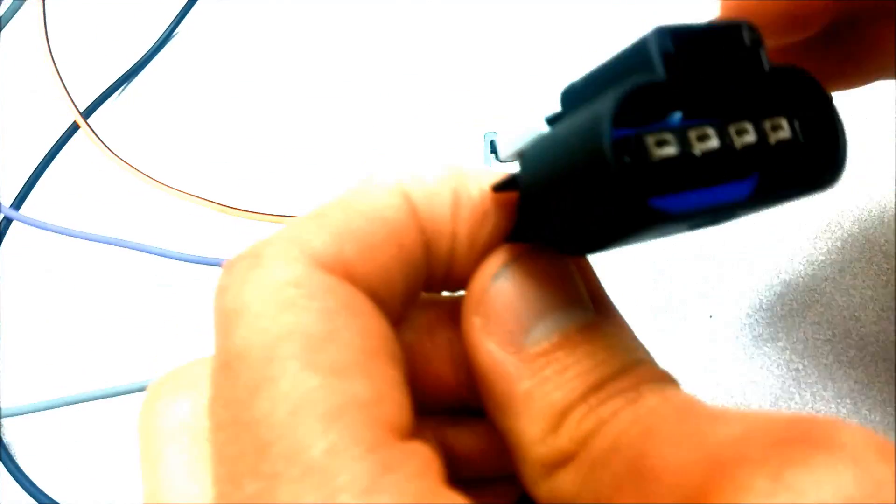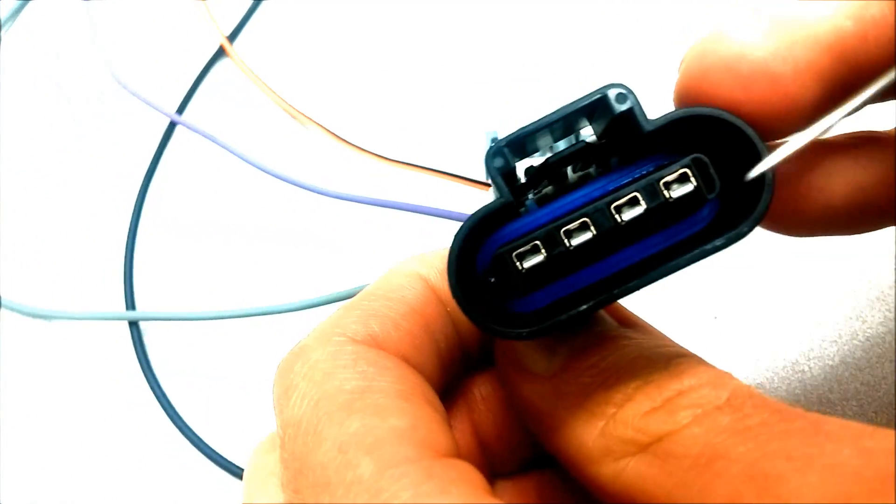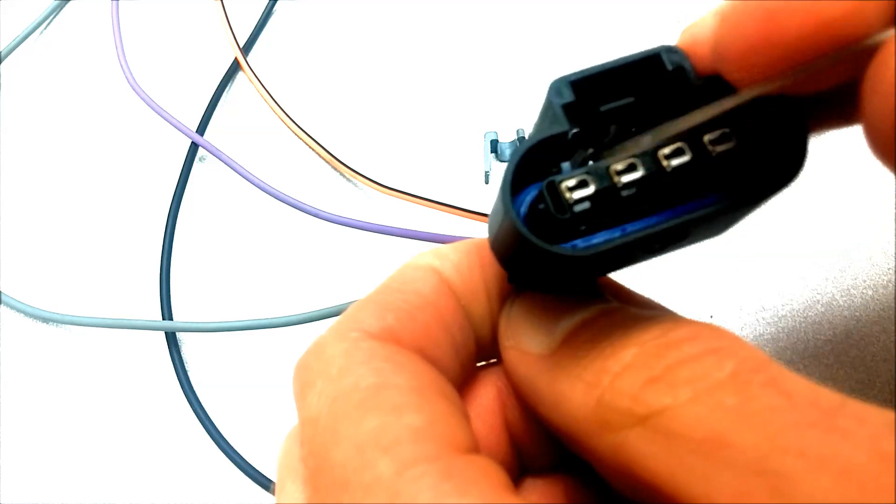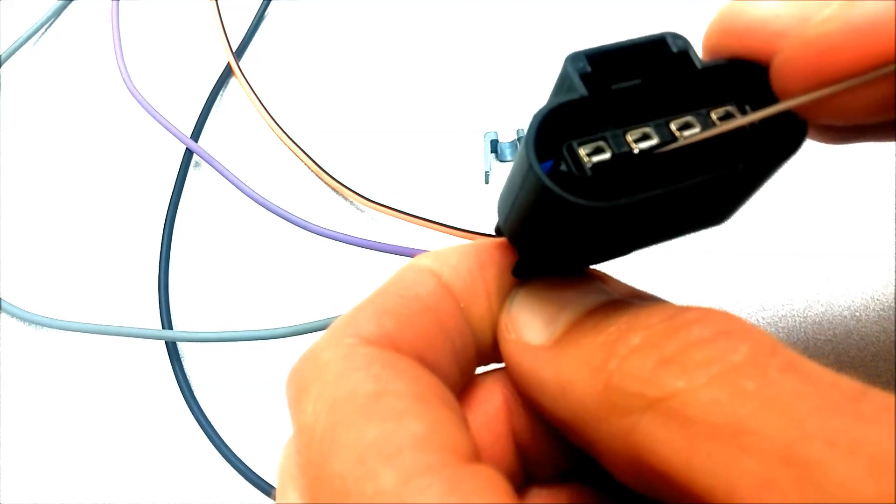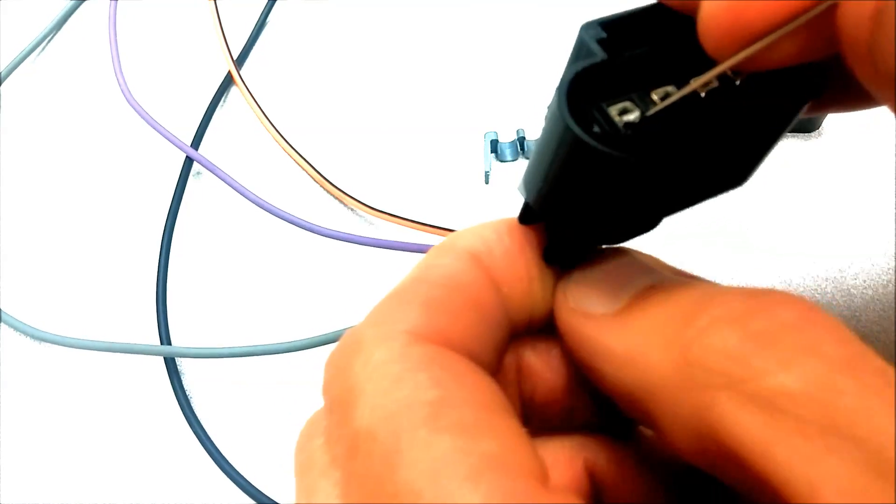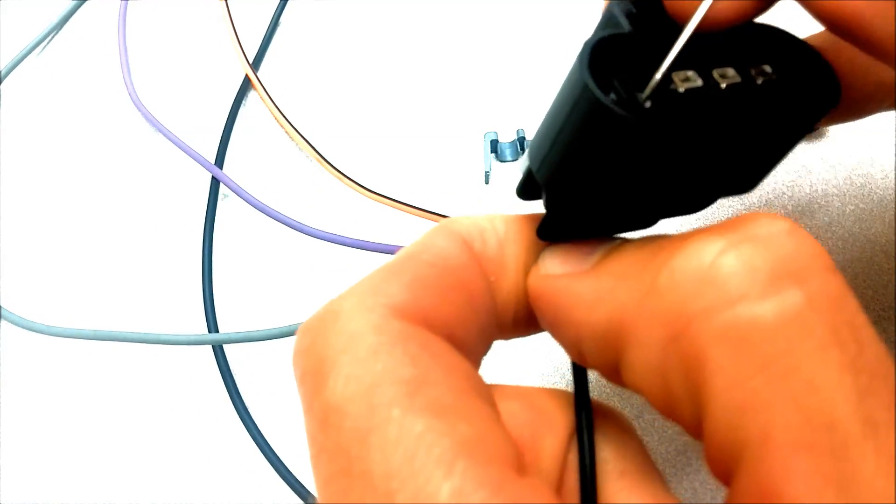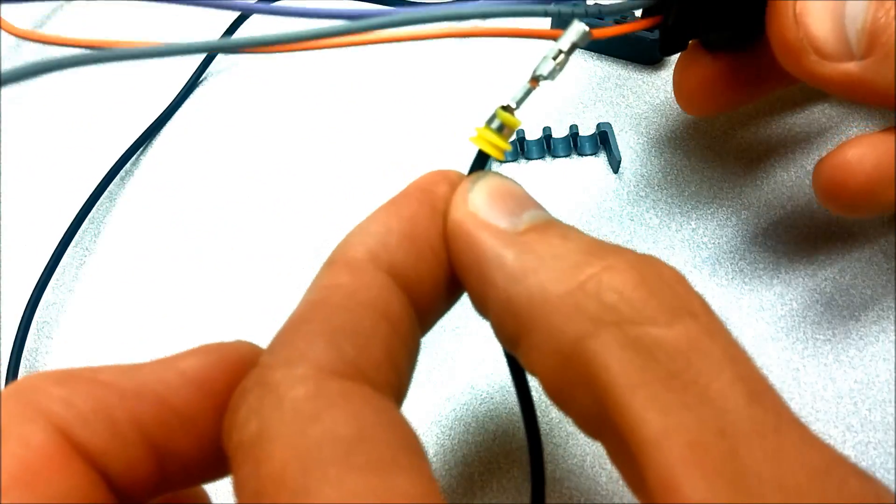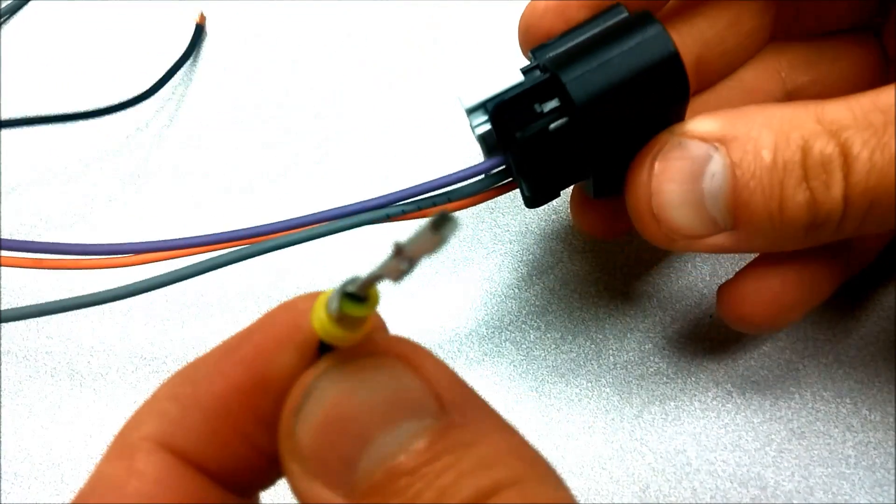We'll remove this black wire first. So you'll notice, as you look down into here, there is a plastic tab that locks each of these terminals into place, and so all I've got to do is pull this plastic tab away from the terminal while I'm pulling the wire out the back with my other hand, and it comes out just like that. Pretty simple.